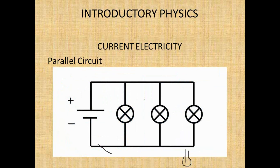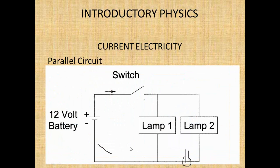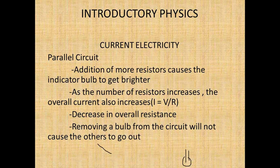The lamp getting brighter indicates that the current is getting larger. The only way the current can get larger is if the resistance decreases. In a parallel circuit, we have two lamps with branch points — one inserted here, one inserted there — and a switch to complete the circuit. As more resistors are added, the indicator bulb gets brighter.